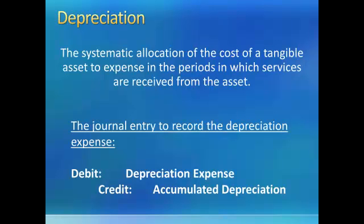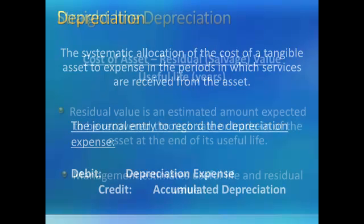As we use an asset, we're decreasing its expected future economic benefit. The journal entry to record depreciation expense is always a debit to depreciation expense and a credit to accumulated depreciation. Accumulated depreciation is a contra-asset account. Therefore, this journal entry will reduce the book value of the asset and increase the expense.